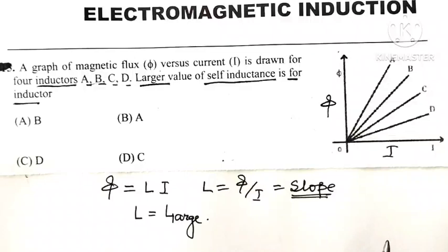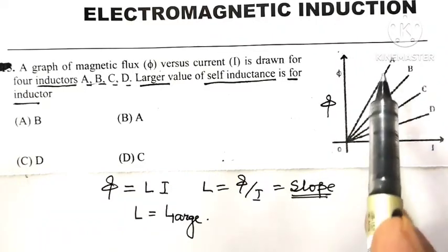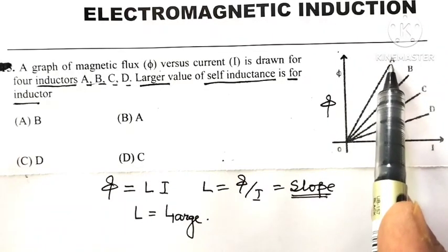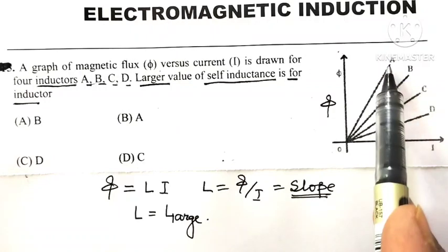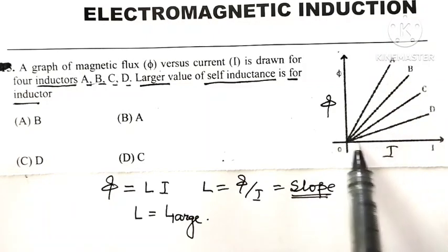And if you look at this graph, which has greater slope? This inductor A has a greater slope because its y segment is greater than x segment.